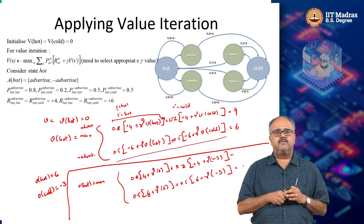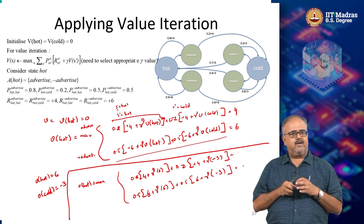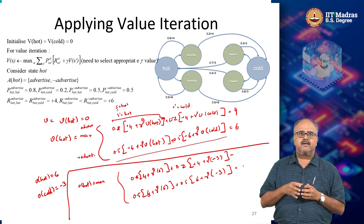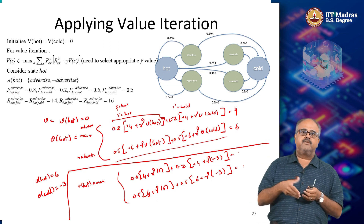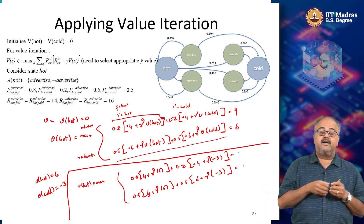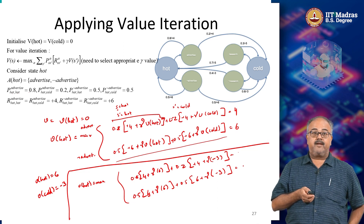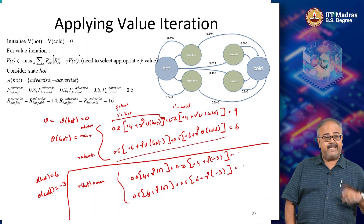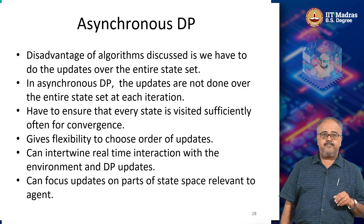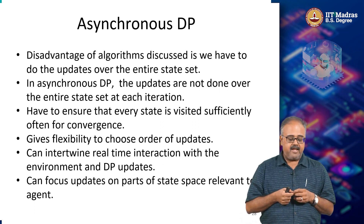So far we have been looking at value iteration or policy iteration where we have been talking about doing this in a synchronous manner. When we have been doing the computation, whether doing the sample computation on the slide or when we did the actual explanation of why this is dynamic programming. But when we actually did the pseudo code and the algorithm, I was telling you that we are not quite doing it as a synchronous update. When we are talking about synchronous update there are multiple problems.